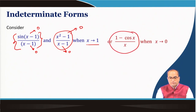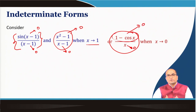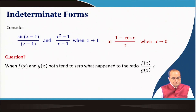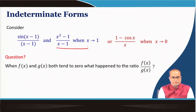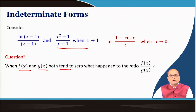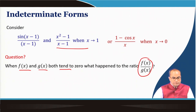A similar situation: consider 1 − cos(x) over x when x approaches 0 — the denominator as well as the numerator both are going to 0. So we will discuss how to evaluate such limiting situations. The fundamental question we are looking at in this lecture is: when f(x) and g(x) both tend to 0, what happens to the ratio f(x) over g(x)?